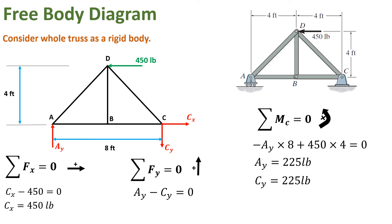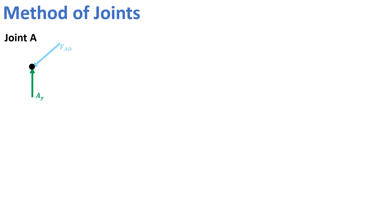CX and CY create no moment about point C because they pass through point C. From the moment equation, AY comes out to be 225 pounds, and from the Y-direction equilibrium, CY comes out to be 225 pounds. We have determined the reaction forces AY, CX, and CY produced due to the applied force of 450 pounds. Now we are going to analyze the joints. First, we consider joint A, where three forces are acting: AY from the roller support reaction, FAB in member AB, and FAD in member AD. We assume AD is a compression member and AB is a tension member.